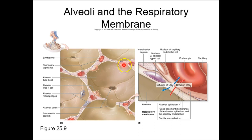You can see the capillary bed embedded in here, and the alveolar macrophages or dust cells portrayed in this image. We also have the portrayal of the respiratory membrane with the capillary endothelial cell, the type 1 alveolar cell, and their fused basement membrane in between.